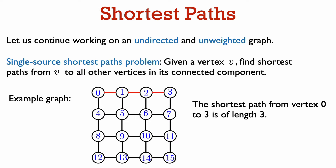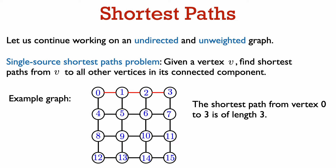There is a path of length 3 between these two vertices, which just goes across the top of the graph. Depth-first search cannot solve the single-source shortest path problem. In fact, if we say that in the adjacency matrix for our example grid graph, vertical neighbors always precede horizontal ones, then depth-first search will take the path in red to go from vertex 0 to vertex 3. You see that it visits every other vertex in the graph before getting to vertex 3.